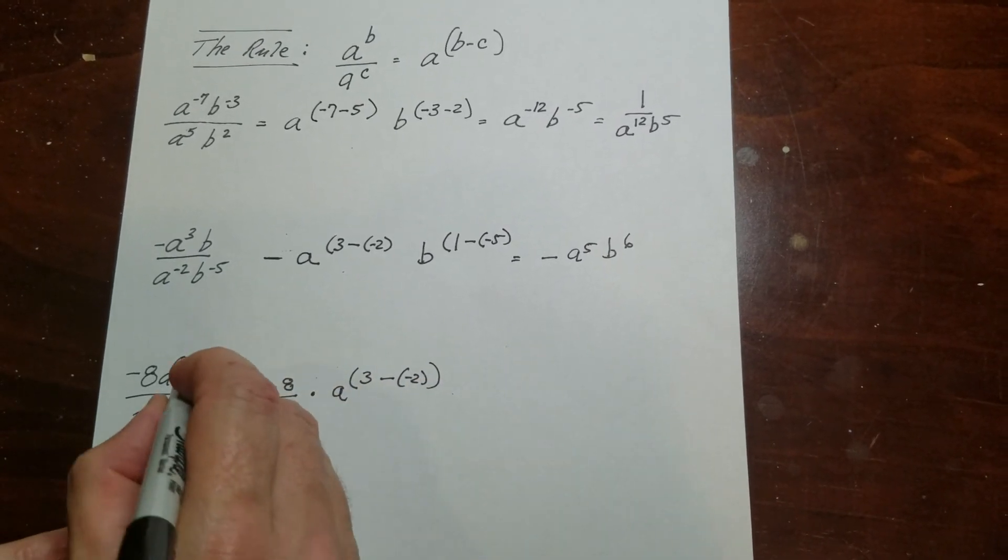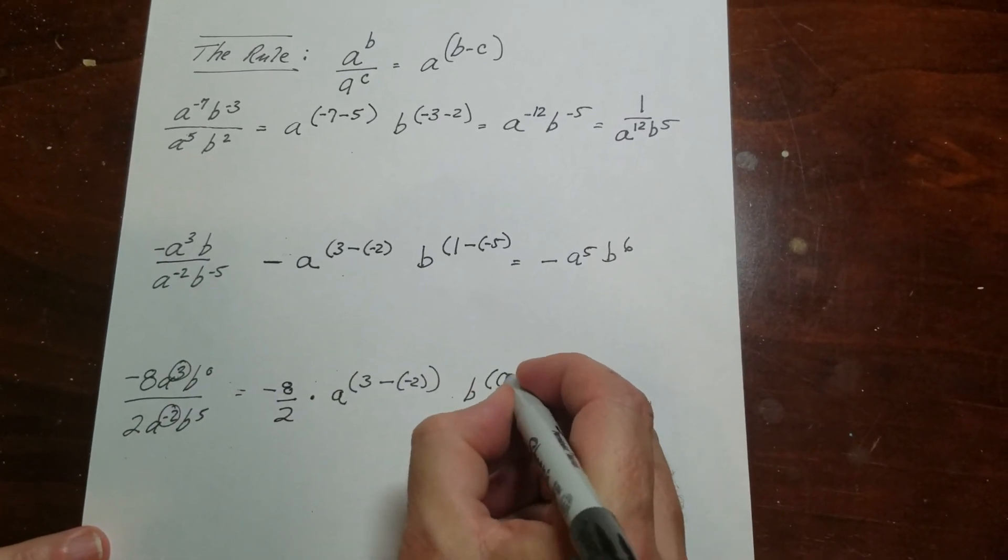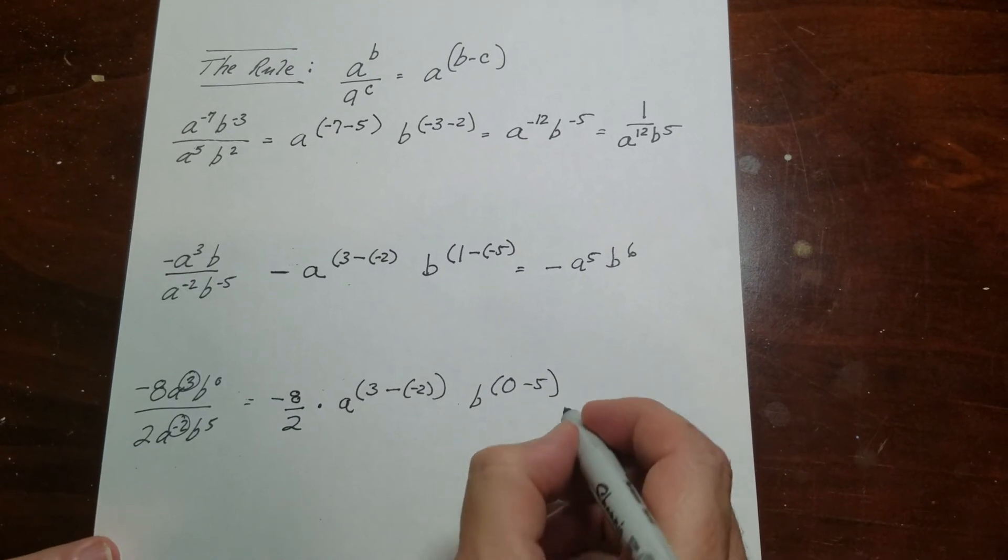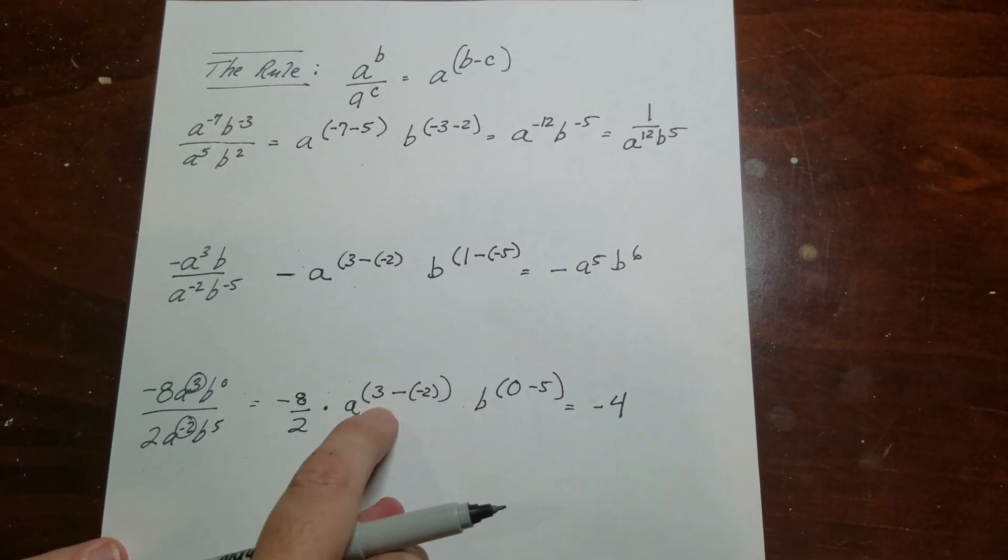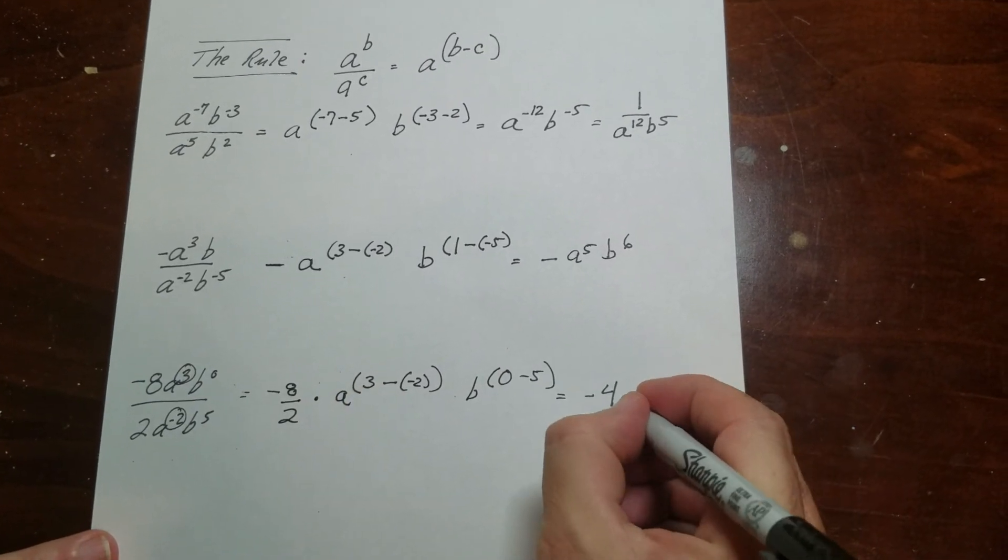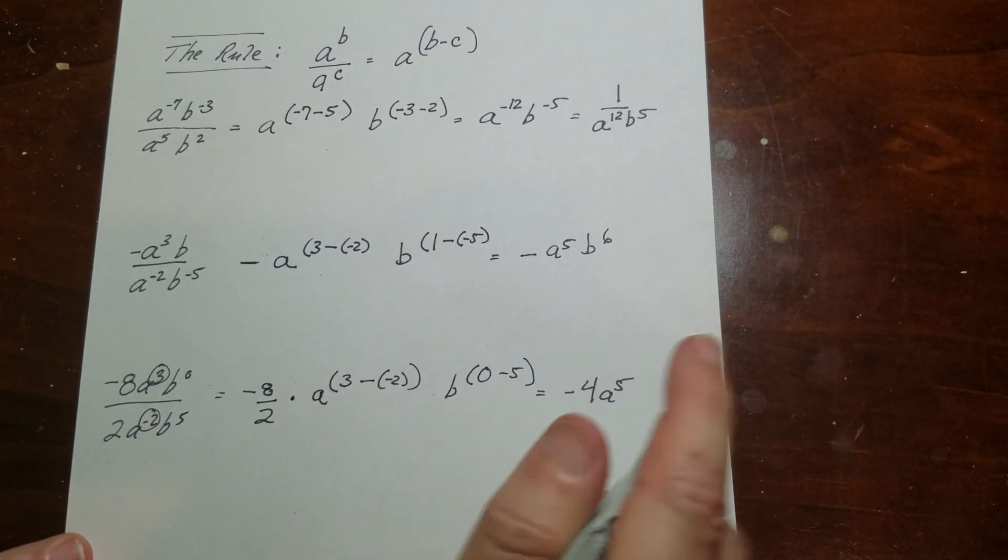And then I have a b to the 0, minus 5. So this part here is negative 4. This is 3 plus 2. This is b to the negative 5.